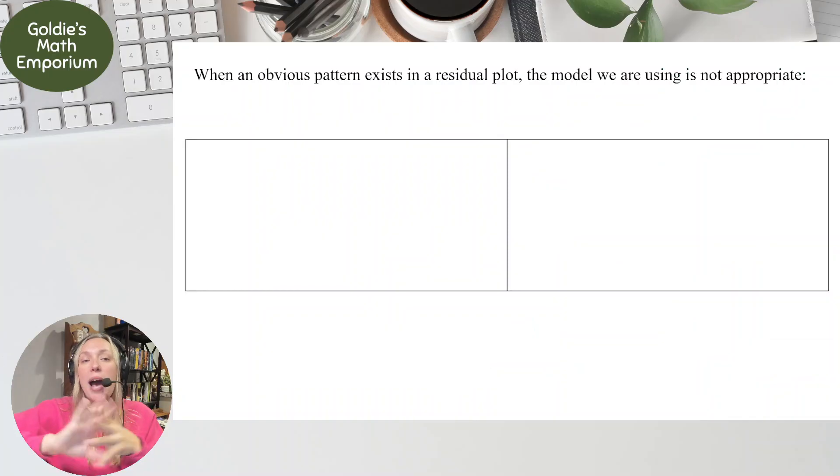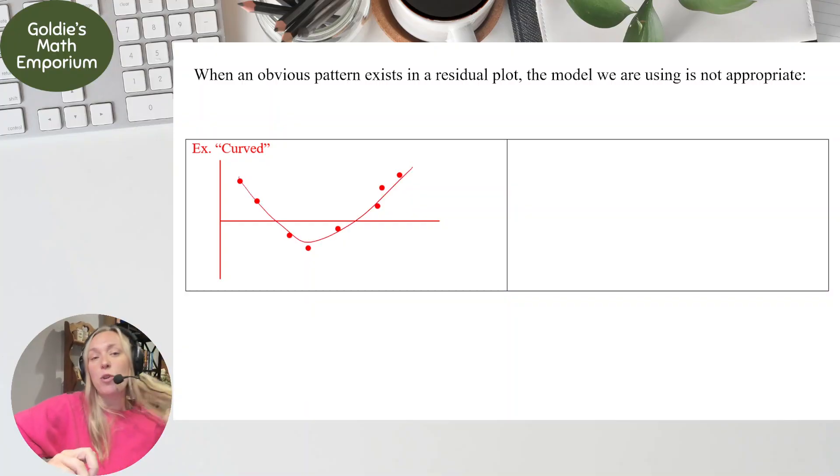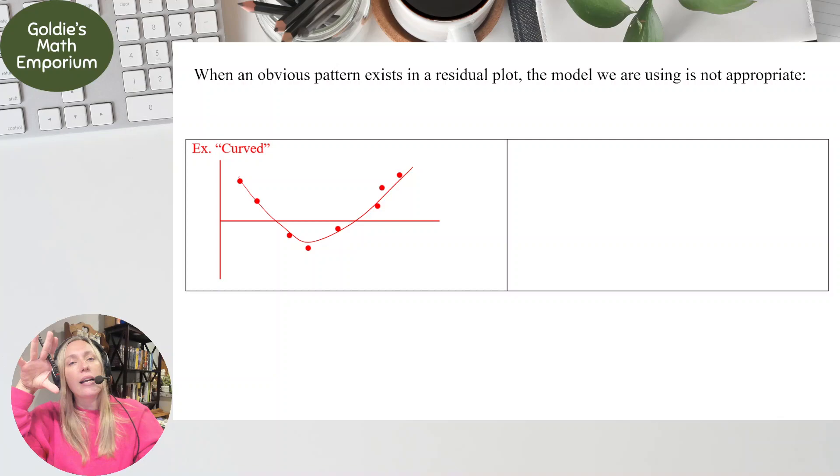So when we say an obvious pattern exists in a residual plot, the model we are using is not appropriate. So one of the most obvious patterns that you are going to see is a curved pattern. This happens usually when you have an exponential equation or exponential graph. Exponential points. If your points follow an exponential model, at first the correlation and maybe even the scatter plot, it might appear that a line can do a good job of making a prediction. But when you look at the residual plot, you see an obvious curved pattern here. And when you see an obvious curved pattern either way, upward, downward, whatever it might be, it's an indication that the data is not going to be fitted to a line well.